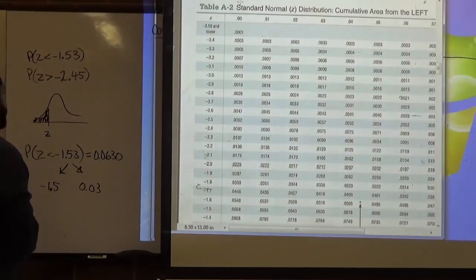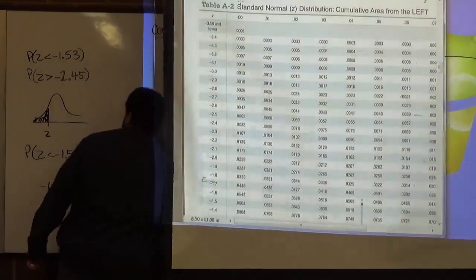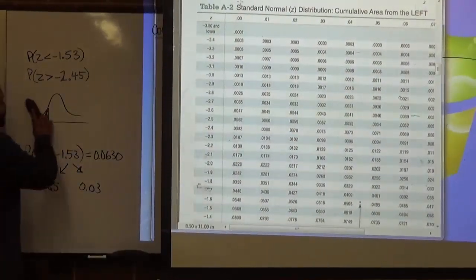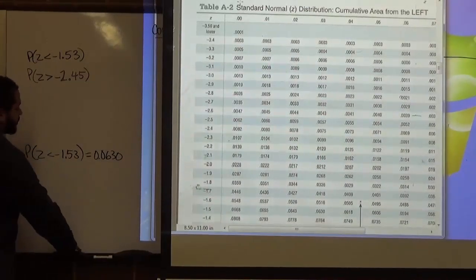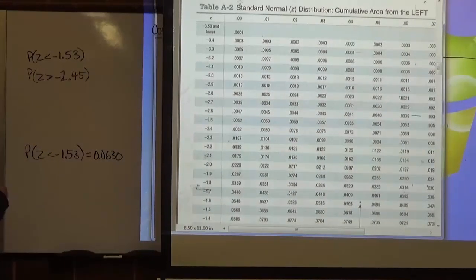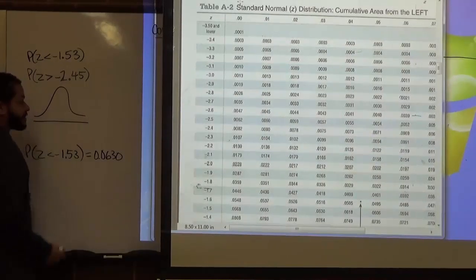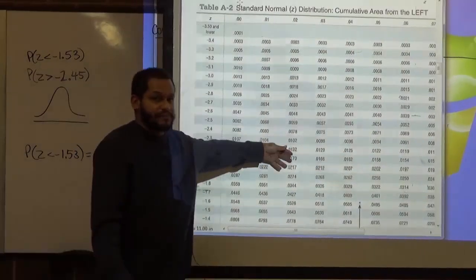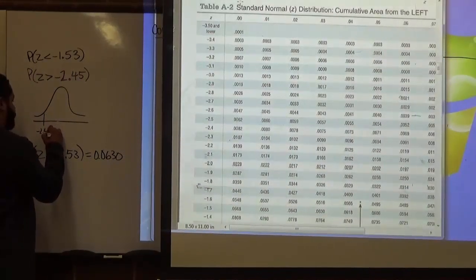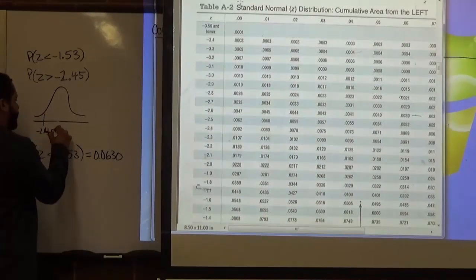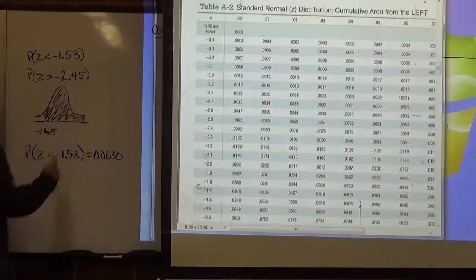Now for the second problem, we have the z-score of negative 2.45. But this time, instead of pointing to the left, the shaded area is pointing to the right. Since all values on the z-chart represent cumulative area to the left, we technically do not have an area to the left here — we have a negative z-score of negative 2.45 with the area shaded to the right.